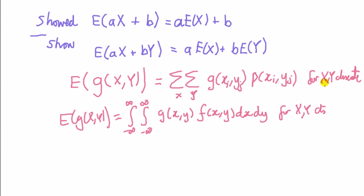of the function times by the joint probability mass function. And that's the case when Y and X are discrete. When X and Y are continuous, we simply replace the double summations by integral, and we're integrating. This is for when X and Y are continuous.